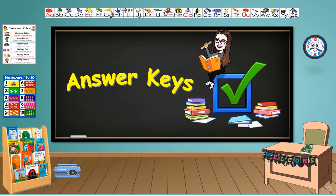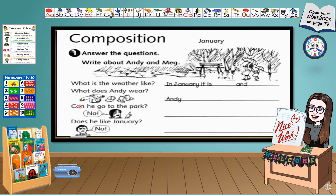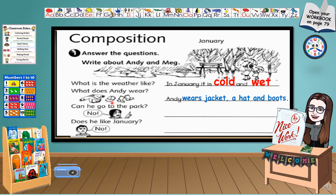Let's check your answers. What is the weather like? Based on the picture, in January, it is cold and wet. What does Andy wear? Andy wears a jacket, a hat, and boots. Can he go to the park? No, he cannot go to the park. Does he like January? He does not like January.